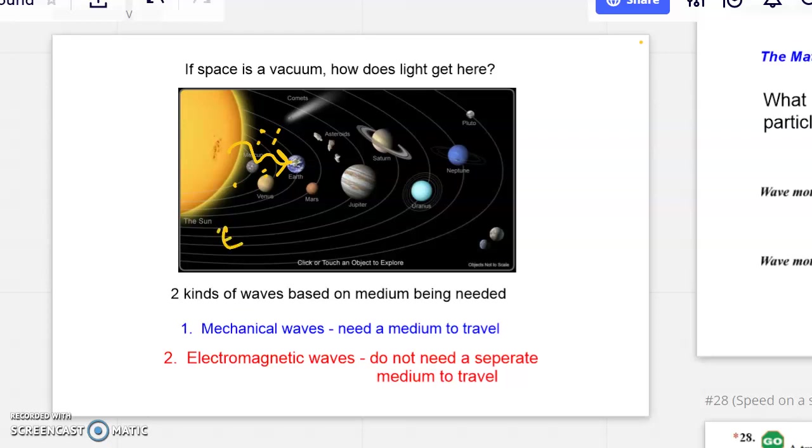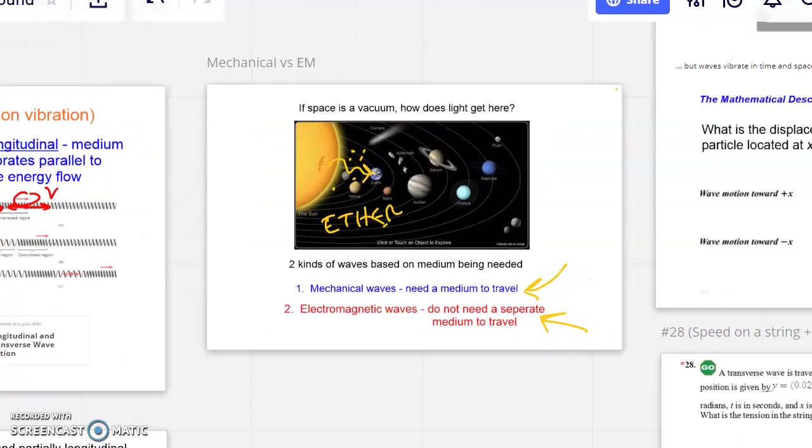And ironically, it was later determined that that ether is, well, not there. And all of a sudden, we said, there really are two different kinds of waves in this manner too. Waves that need a medium to pass through, we call those mechanical waves. And those are the most of the waves you can think of. But then there's also going to be this other kind of wave, this electromagnetic wave that does not need a medium. More on that upcoming.